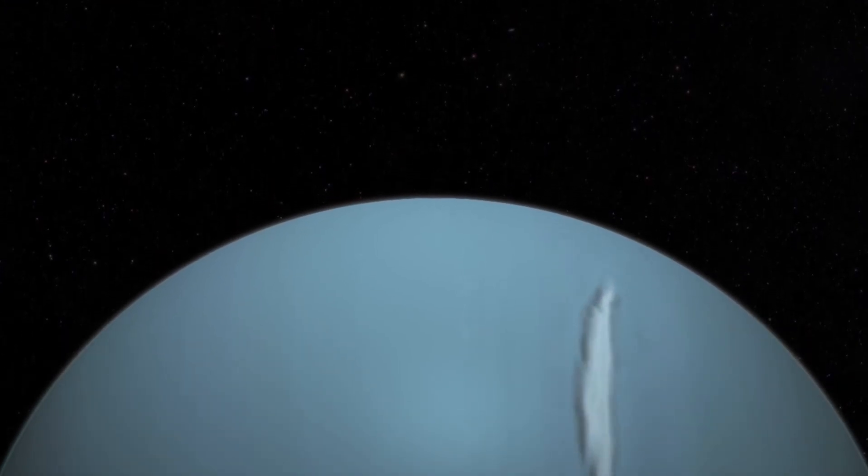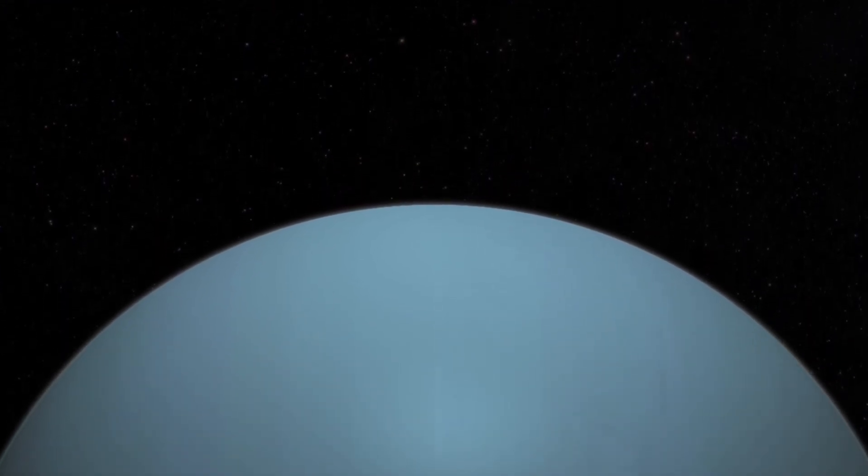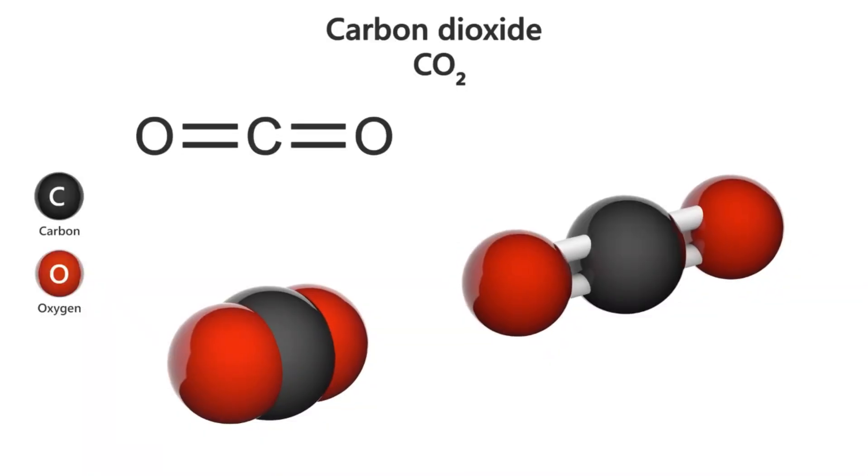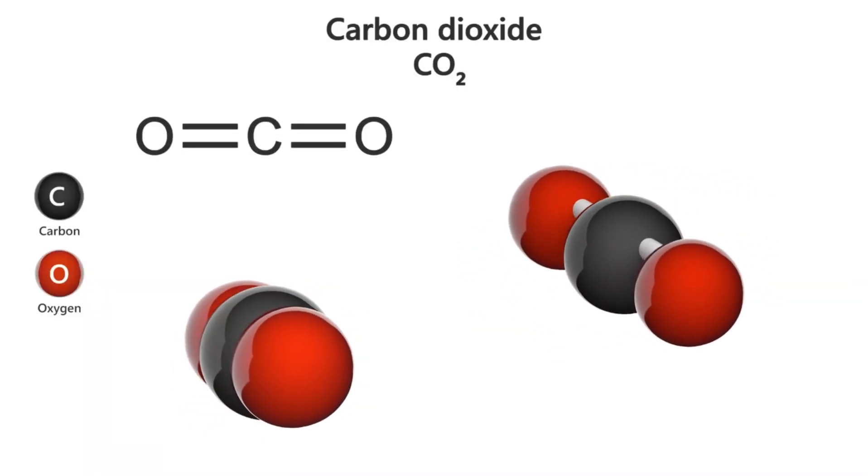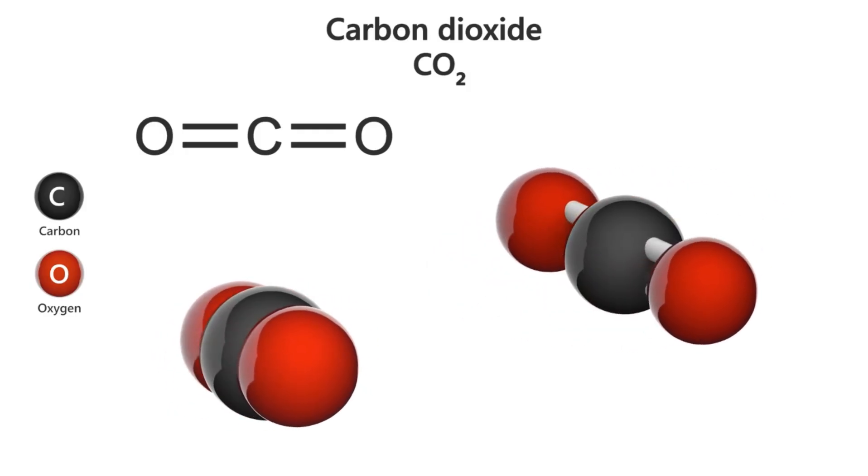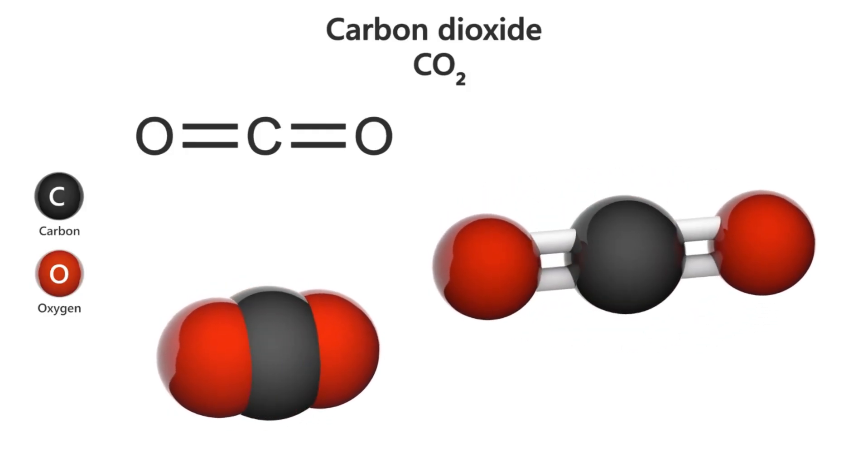In the atmosphere of a distant world, believed to be an ocean-covered planet, Webb detected compelling signs of carbon-based molecules. These aren't just any molecules. They include methane and carbon dioxide, organic compounds that are considered crucial to life as we know it.